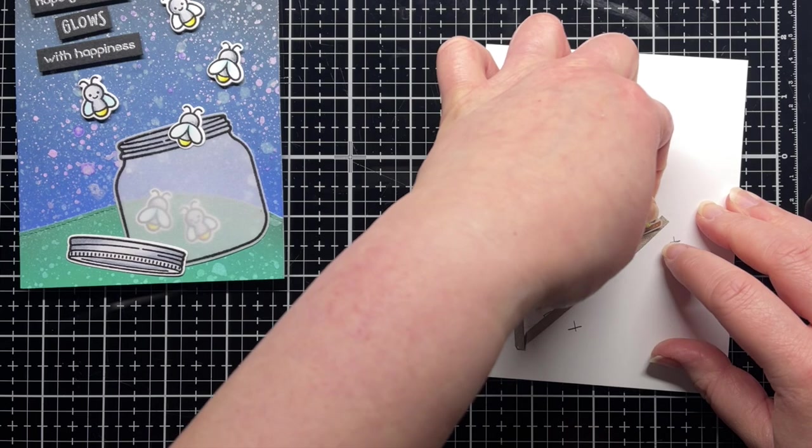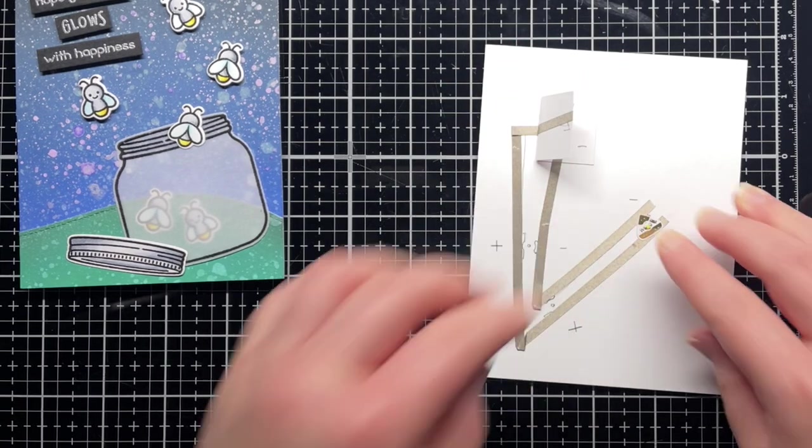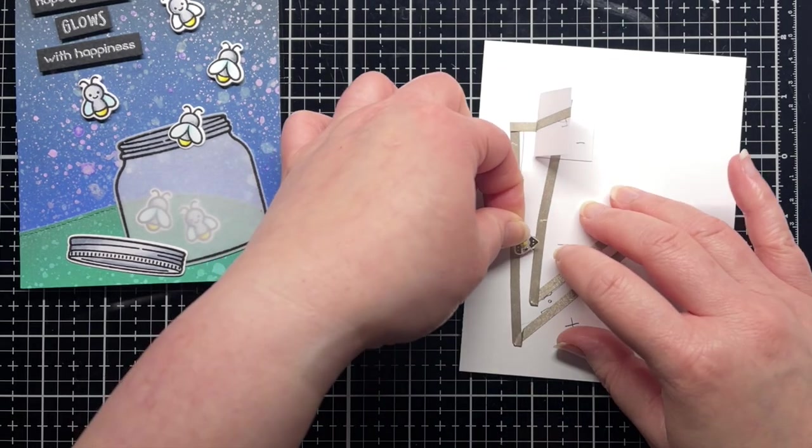Then I add my white LED stickers, making sure to align the negative and positive parts of the sticker to the correct line of tape.